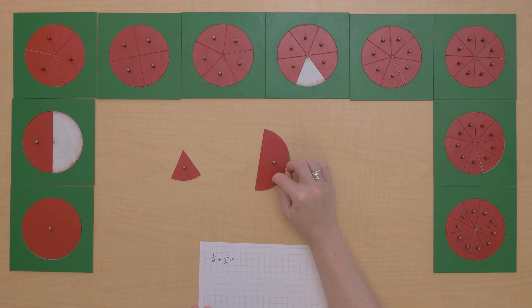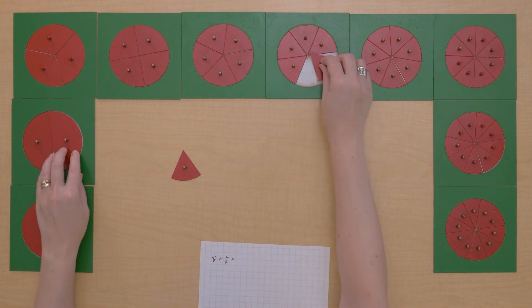What can we do to solve this problem? Let's exchange this one-half for an equivalent fraction in sixths. One-half is three-sixths. So let's put that here.